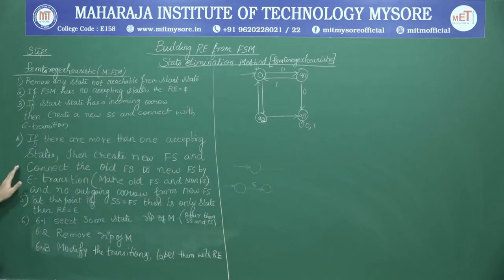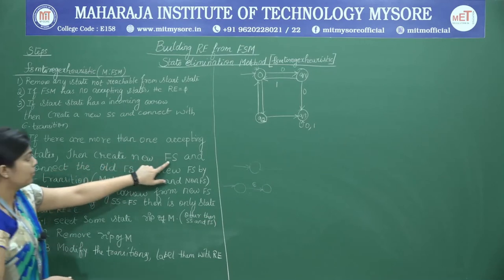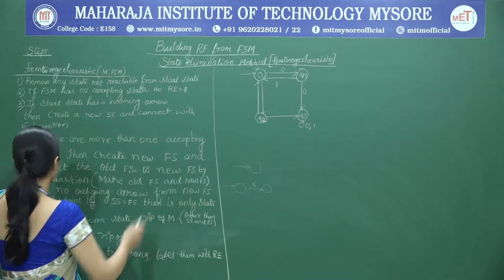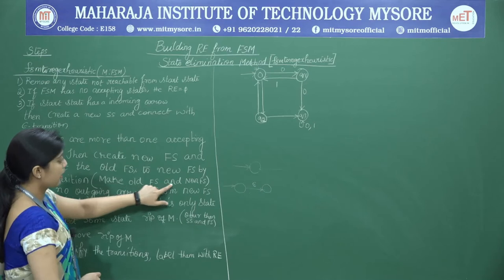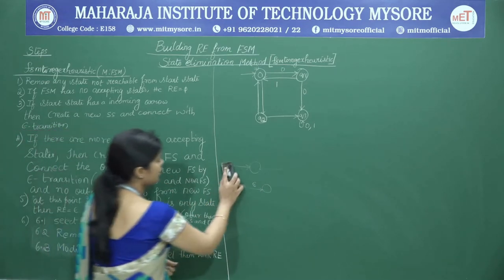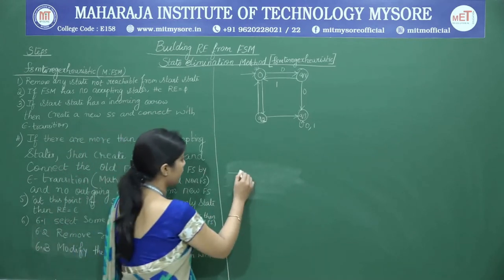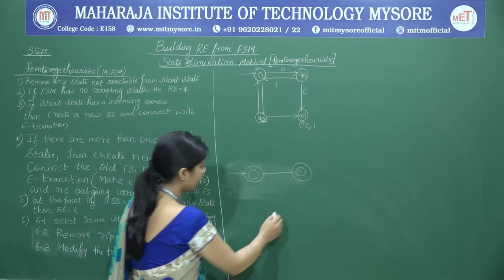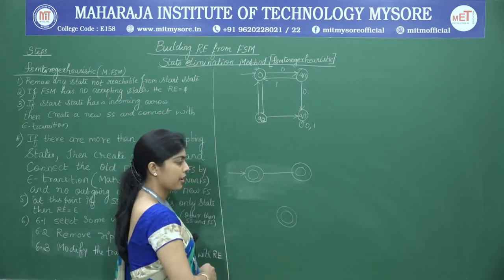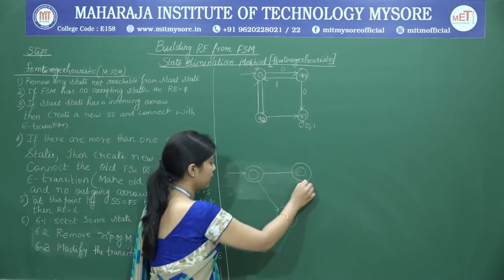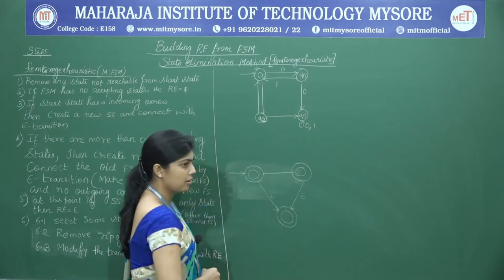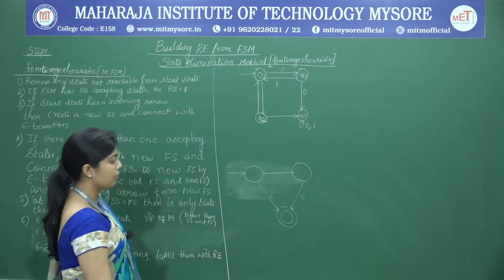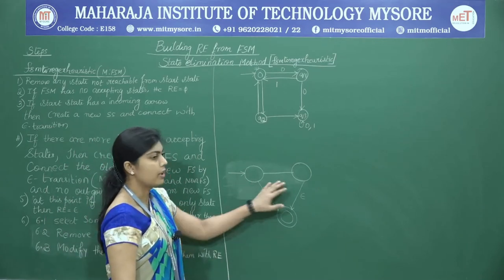Step 4: if there are more than one accepting states, create a new final state and connect the old final states to the new final state via epsilon transitions, then make the old final states non-final. For example, if two states are both final states, we create a new final state, connect both via epsilon transitions, and mark the old ones as non-final.